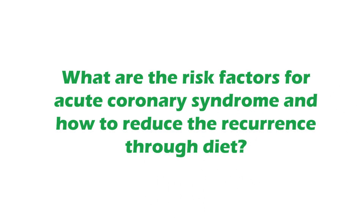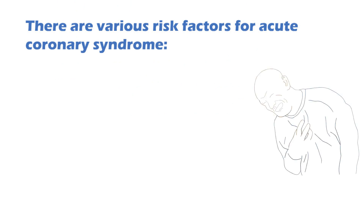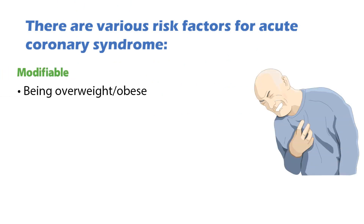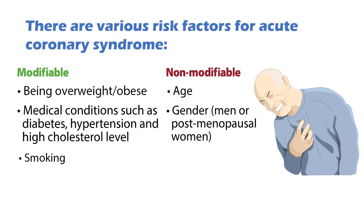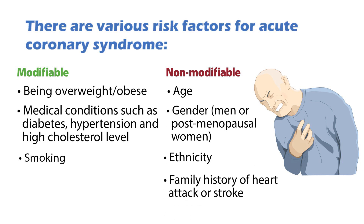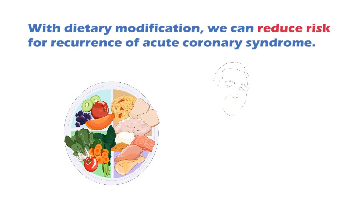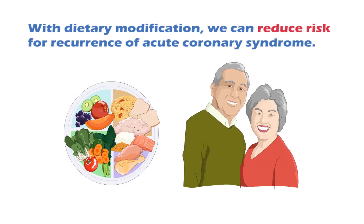There are various risk factors for acute coronary syndrome. Modifiable risks include being overweight or obese, medical conditions such as diabetes, hypertension and high cholesterol level, and smoking. Non-modifiable risks are age, gender, ethnicity, and family history of heart attack or stroke. With dietary modification, we can reduce the risk for recurrence of acute coronary syndrome.